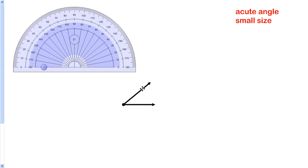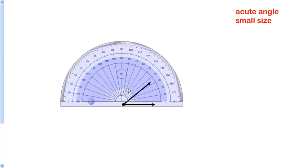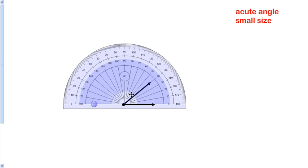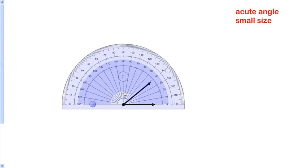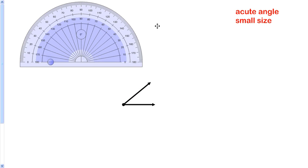That's how you measure an acute angle. Let's go to an acute angle like you might see in your book that's small. You do the same thing, you line the zero up and you line the vertex with the center of the protractor, but it might not be easy to read an angle like this.